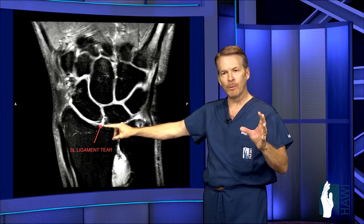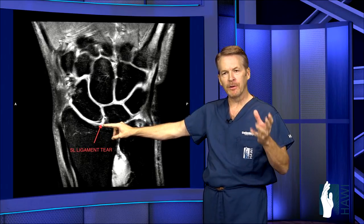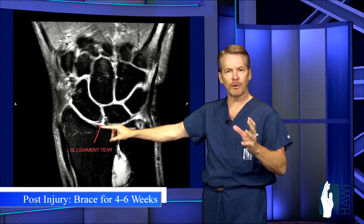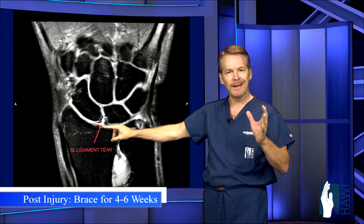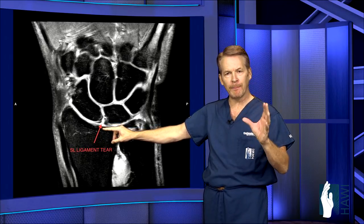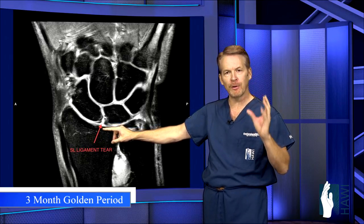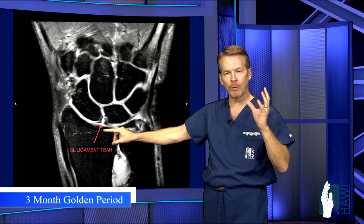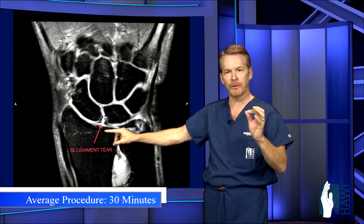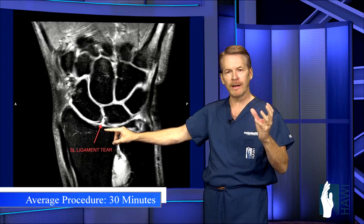Initially with a ligament tear of the wrist, conservative treatment would be about four to six weeks in a cast or brace, and sometimes that will heal. But after that period, there's about a three-month golden period where we aggressively treat these with minimally invasive arthroscopic surgery to go in and try to get these ligaments to heal.